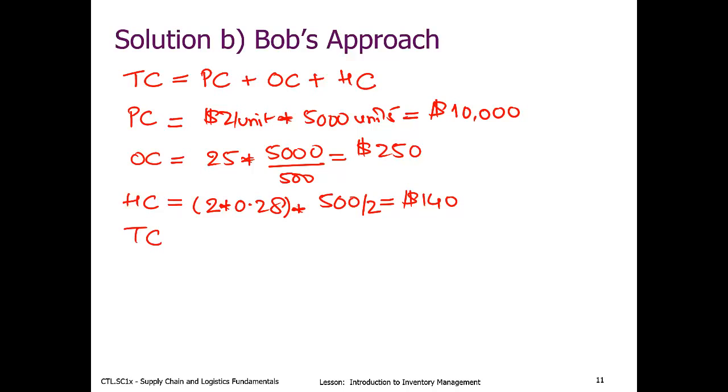Can we calculate the total cost now? Yes. Add these three numbers up. And what we get is a total cost of $10,390. And yes, this is a little bit cheaper than Sally's solution.